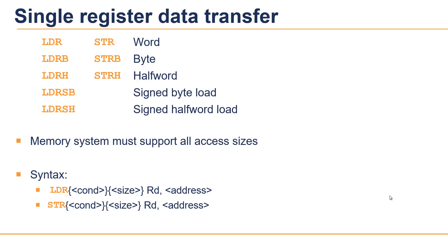There are a number of variations of LDR instructions. ARM has given the programmer freedom to load a word, half word, or byte. These instructions are LDRB, which loads only one byte into the lower byte of the register, and LDRH, LDRSB, and LDRSH, which have a similar explanation.